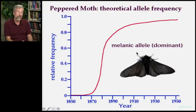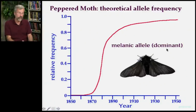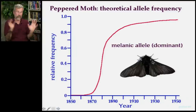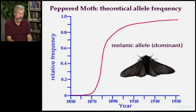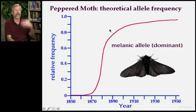It's believed that the allele that coded for the black coloration was a single dominant allele. You only needed one copy to be hidden and protected against your predators, so selection pressure was intense for it to become more common in the population.